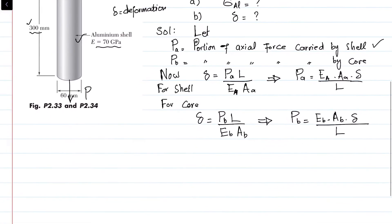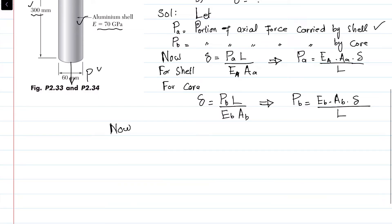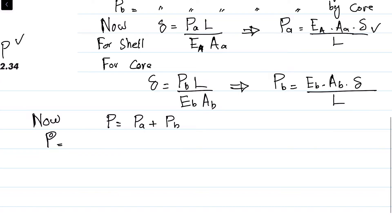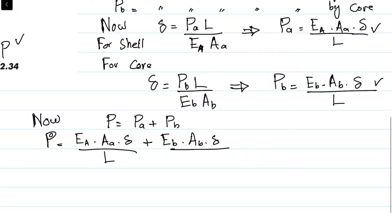We know that the total applied load P equals the load taken by the shell plus the load taken by the core: P = P_a + P_b. Substituting both expressions: P = (E_a × A_a × δ / L) + (E_b × A_b × δ / L). Since δ/L is common in both terms, we factor it out: P = (δ/L) × (E_a × A_a + E_b × A_b).